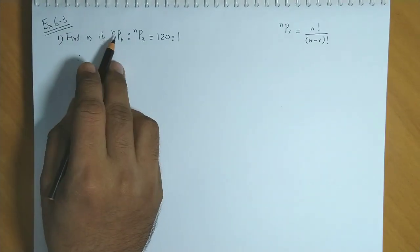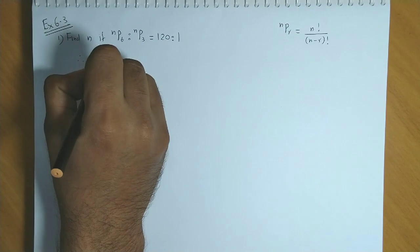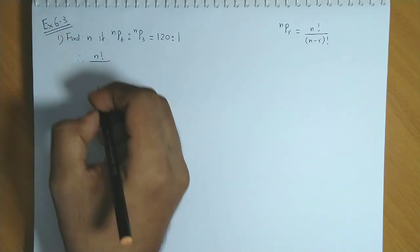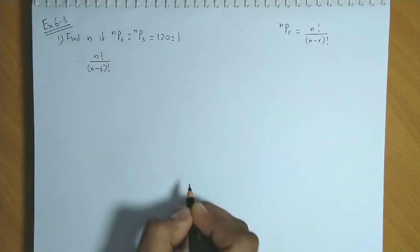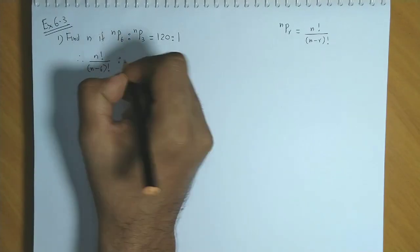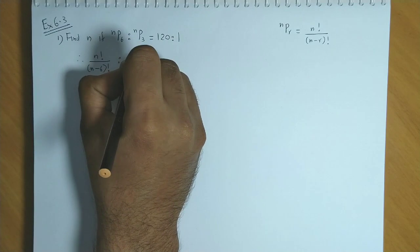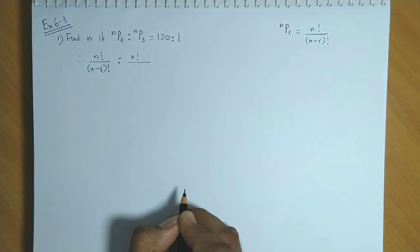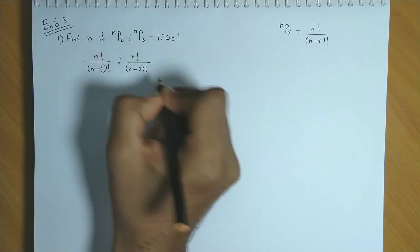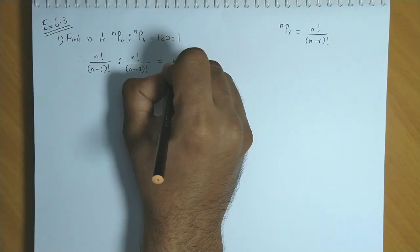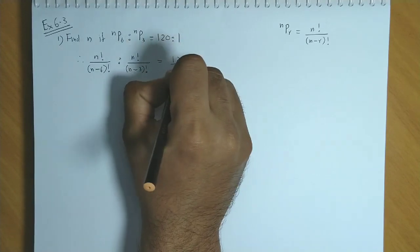We get NP6 will be n factorial upon n minus 6 factorial is to n factorial upon n minus 3 factorial. And the right side is 120 is to 1.